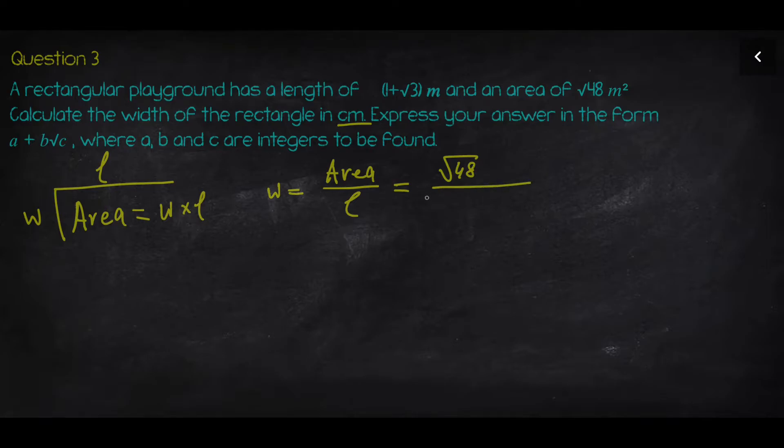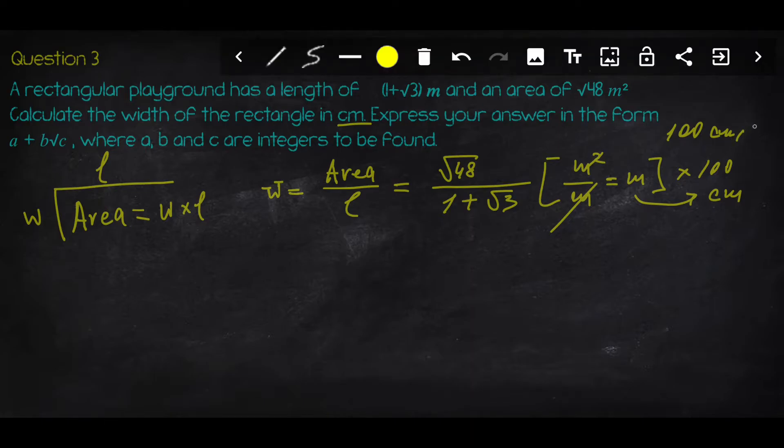The area is √48 over the length (1+√3). In terms of units, we have meters squared over meters. If you apply this units rule, that will ensure you correctly express the width. You can cancel meters squared and meters, so eventually you'll end up with meters. Later on, you'll need to convert into centimeters by multiplying by 100. Take into account that 100 centimeters equals one meter.